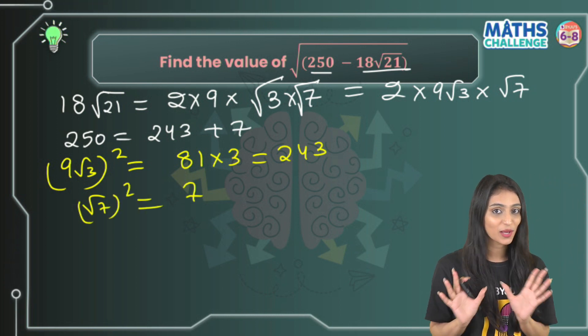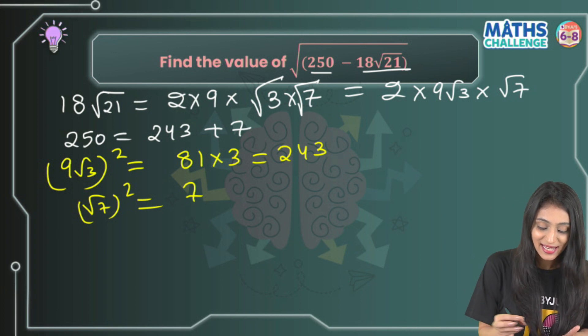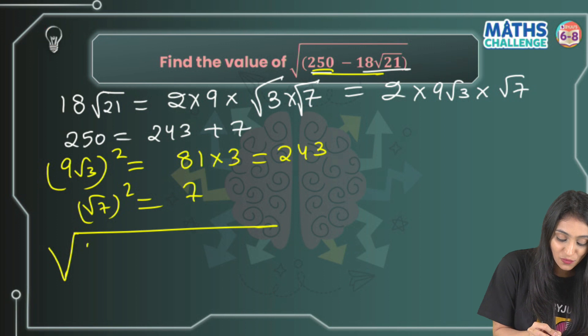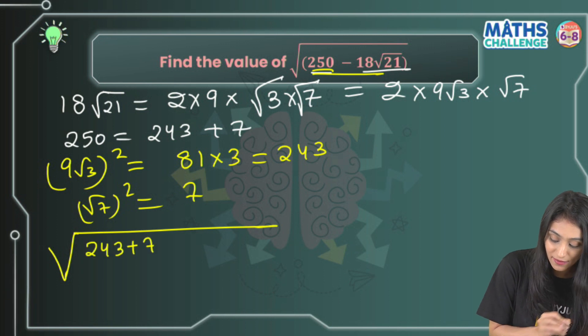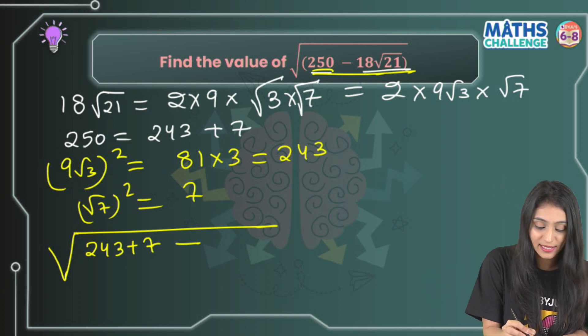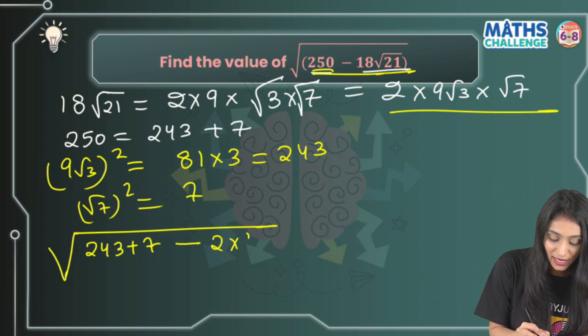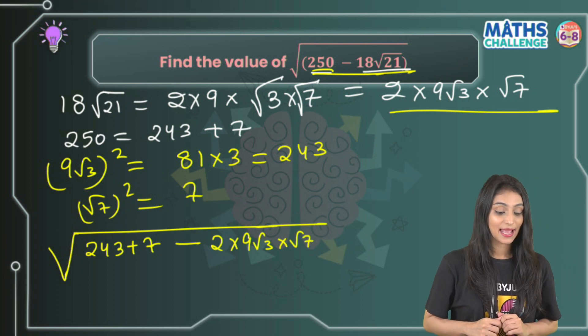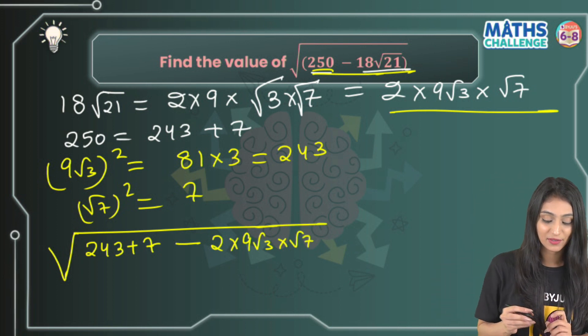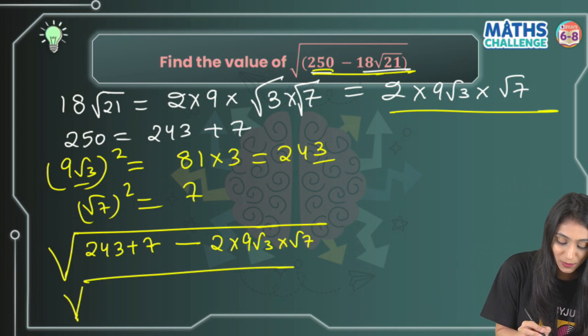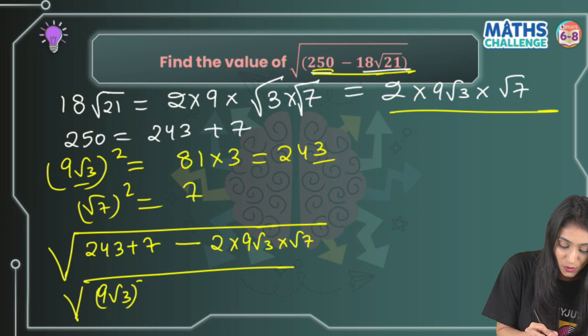I'm sure you must have understood what I'm going to do next. I'll simply keep the square root as it is, write this 250 as 243 + 7, minus this 18√21, which could be written as 2 × 9√3 × √7. This 243 plus 7 - this 243 could be written as (9√3)², so I'll write (9√3)² + (√7)² - 2 × 9√3 × √7.